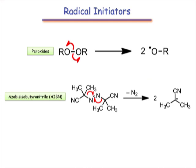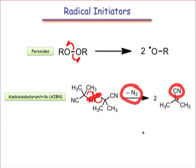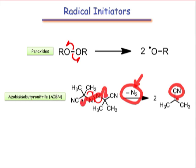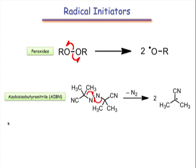The lengthily named azobisisobutyronitrile, or AIBN, is an interesting substrate in which two bonds break homolytically. The C-N bonds on the left and on the right of the azo group — the N=N double bond — both break to yield a molecule of nitrogen gas, which is lost, and two radicals in which the radical is adjacent to a cyano group that stabilizes it by resonance. The kinetic loss of nitrogen gas drives this reaction nearly to completion. Note that in this drawing two arrows going back to the carbons on which the radicals reside are implied by the arrows drawn.